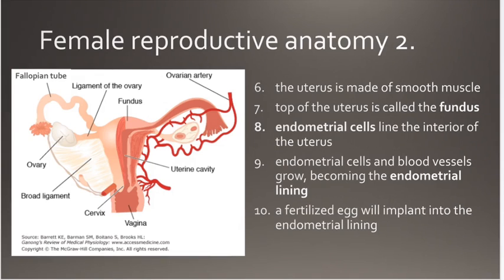The uterus itself is made of smooth muscle, and it's actually about the size of your closed fist, so it's not very large in a non-pregnant woman. The top of the uterus is called the fundus, and that's important because if something is being inserted into the uterus, like an IUD, it's important that it not be inserted too far up so that it doesn't actually puncture the top of the uterine muscle.